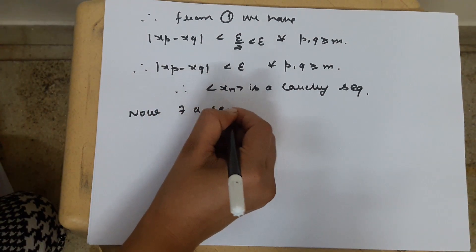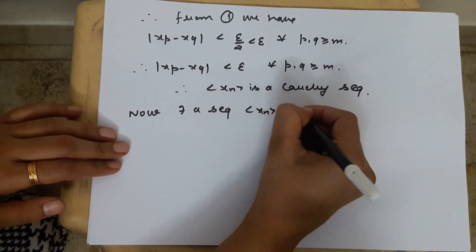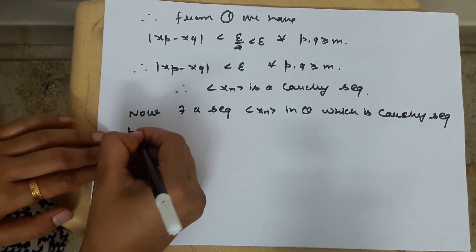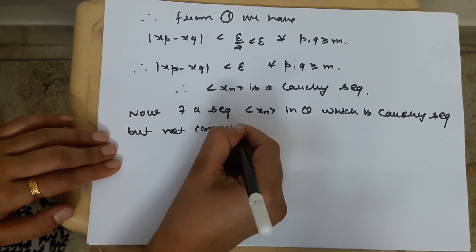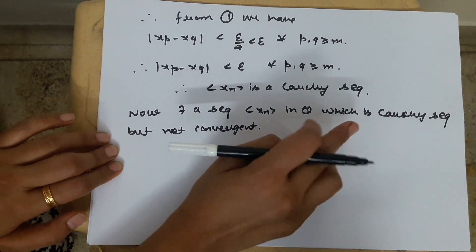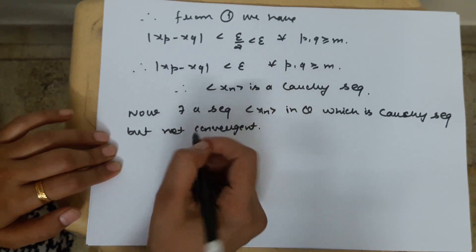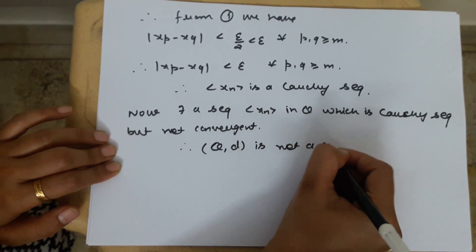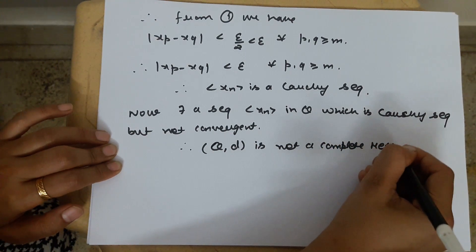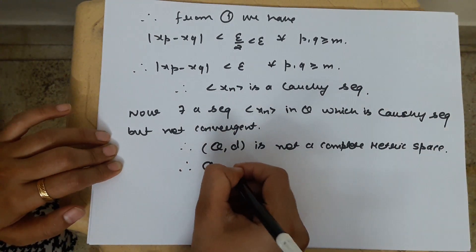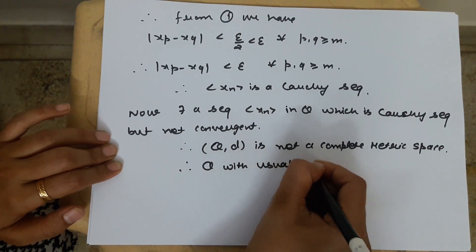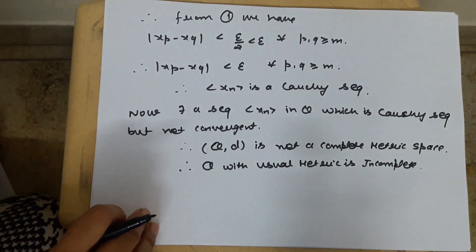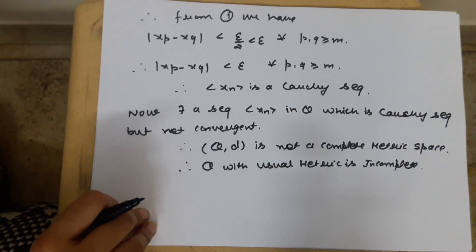There exists a sequence Xn in Q which is a Cauchy sequence but not convergent in Q. Therefore Q,d is not a complete metric space. Therefore Q with the usual metric is incomplete.